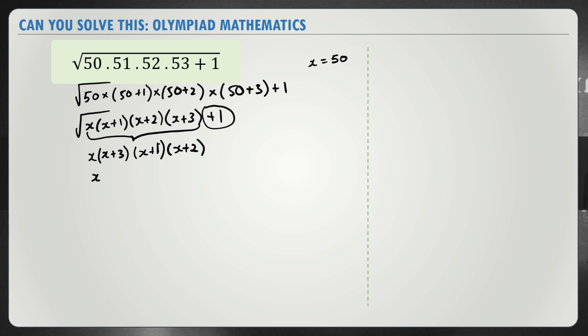When we work this out, we get x squared plus 3x into x squared plus 3x plus 2. And you notice x squared plus 3x becomes our common factor and we let y be equal to x squared plus 3x.